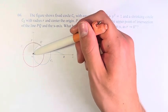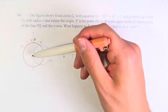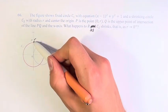and a shrinking circle C2 with radius r and center the origin, such that P is the point (0,r) right here.